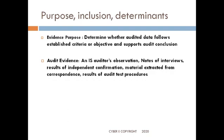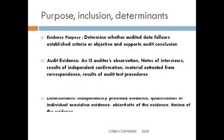What are the various places where audit evidences could be found? One could be the auditor's observation — the auditor could be observing things. Another is notes of interviews, where the auditor takes interviews of people and makes notes which can be referred back and checked. There are also results of independent confirmation, information extracted from correspondences, and results of audit test procedures.